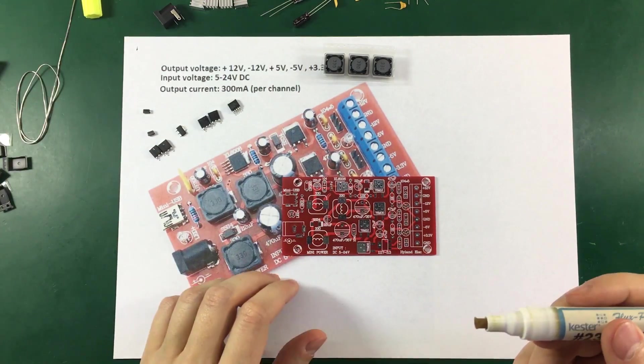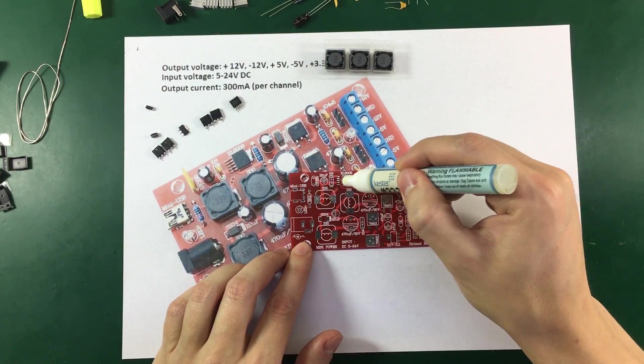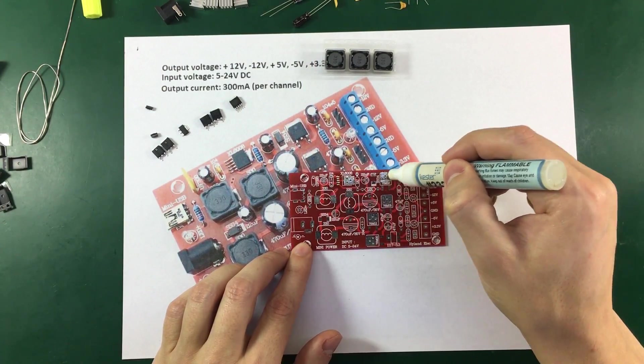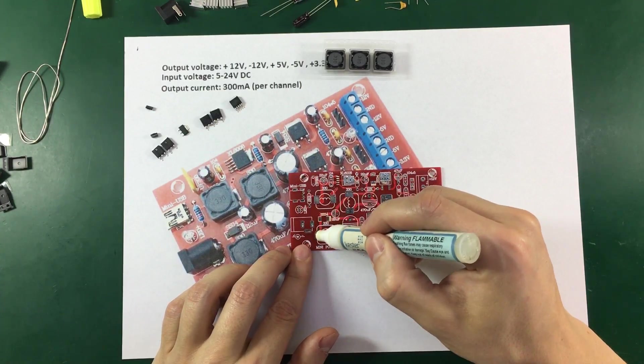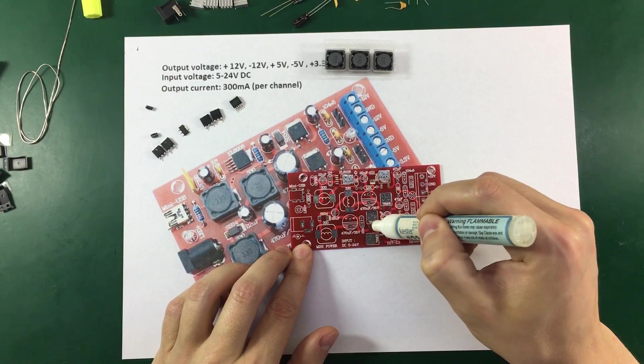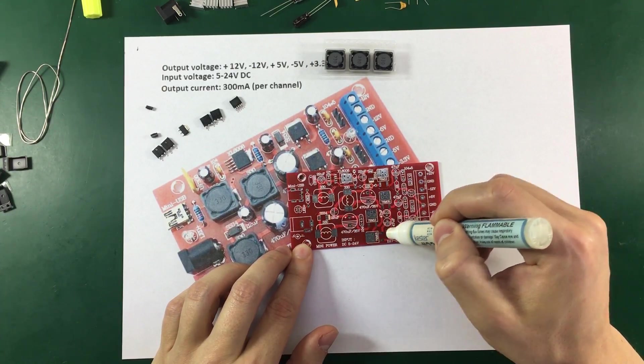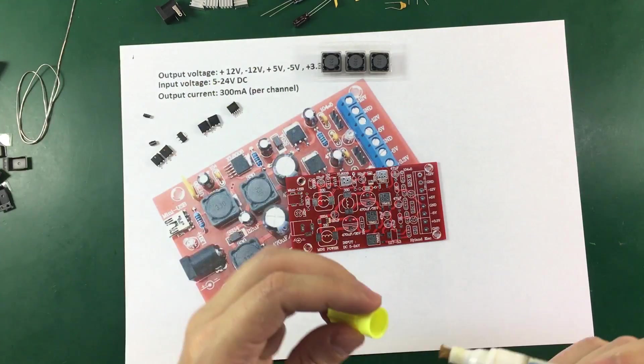So I'm going to start by applying some of this water-soluble flux on the pads. This will really help with soldering and after I'm done I can just clean it off in plain tap water and I will be left with a very clean and nice looking PCB.